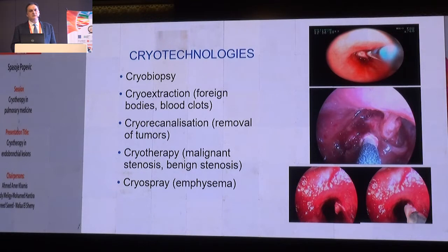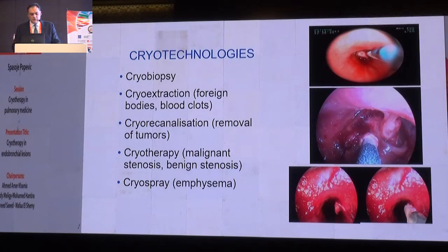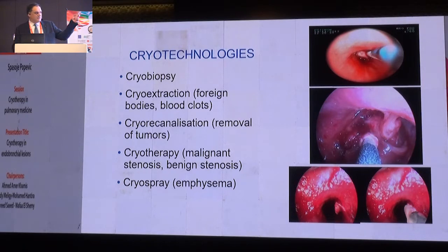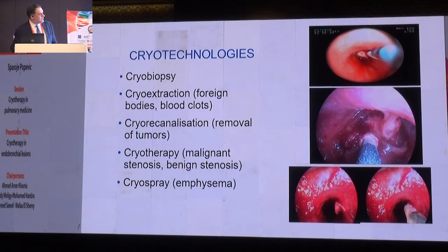There are technologies we use inside the airways. First, cryobiopsy — either for directly visible lesions in the airway or peripheral cryobiopsies. Cryo is especially very useful in ICUs when removing blood clots, for example after tracheostomy, when a blood clot is causing atelectasis — you can remove it by freezing and removing it in one piece. You can also remove foreign bodies that contain water, a very good indication for cryo extraction, and sometimes remove a whole tumor, though there are some limitations.